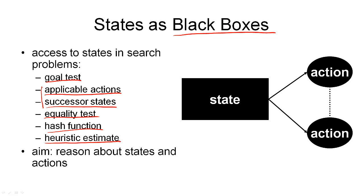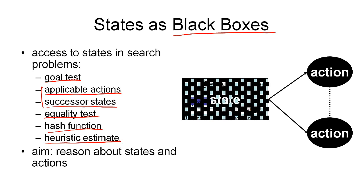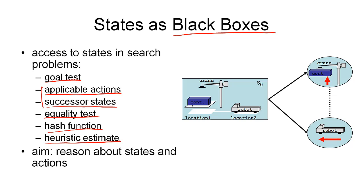Our aim in planning is to reason about these states and actions, and that is very difficult if we don't have access to the internal structure. Just think about what we have learned at the end of the last segment, namely that it is possible to automatically derive good heuristics. But this is only possible if we know something about the states and actions in our search problem — so we need to know the internal structure. The STRIPS representation gives us a standardised way of looking at the internals of states and actions. There will be a formal language that we will define that describes what is going on in a state and what actions do to the state, and that is the fundamentals of the STRIPS representation we will look at now.